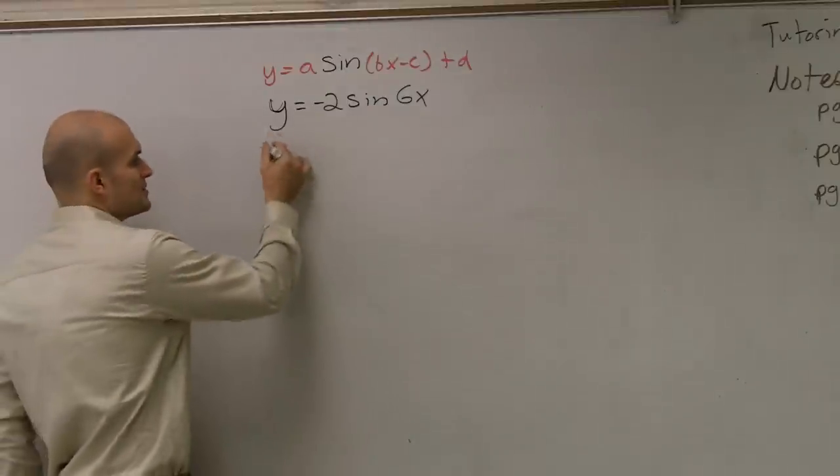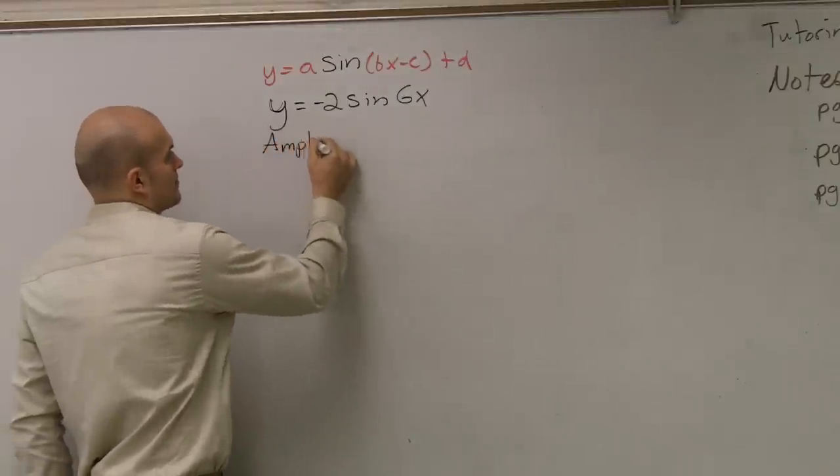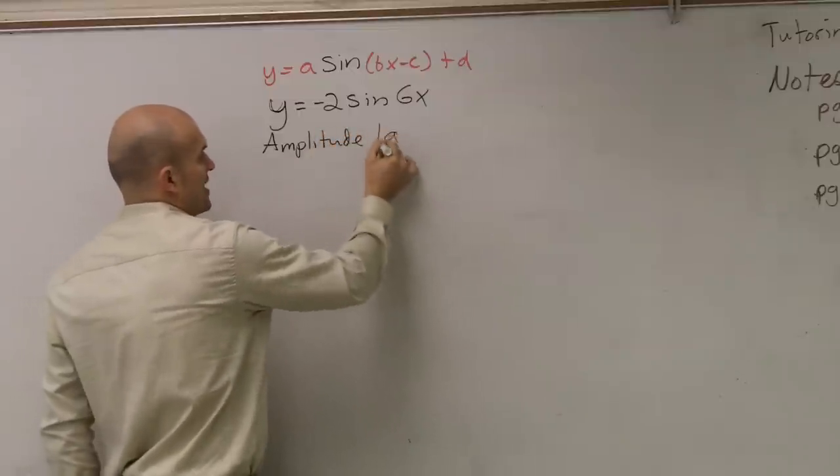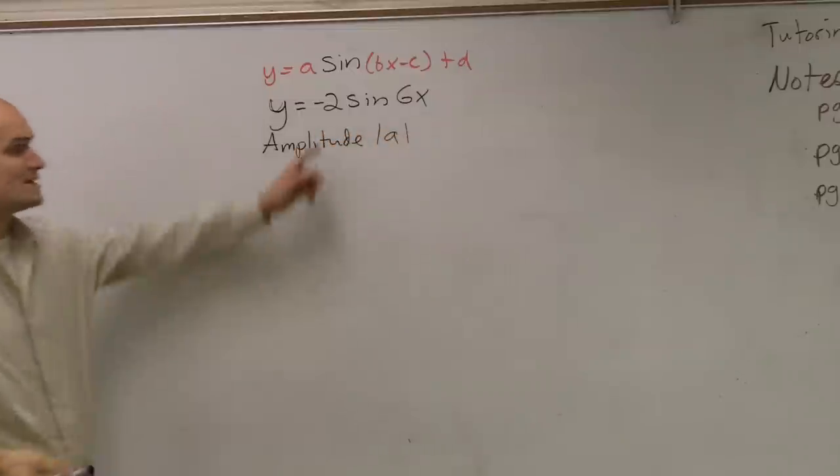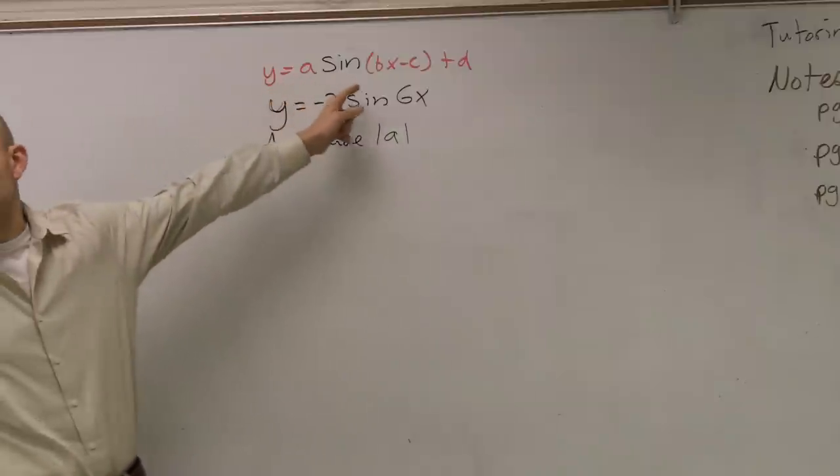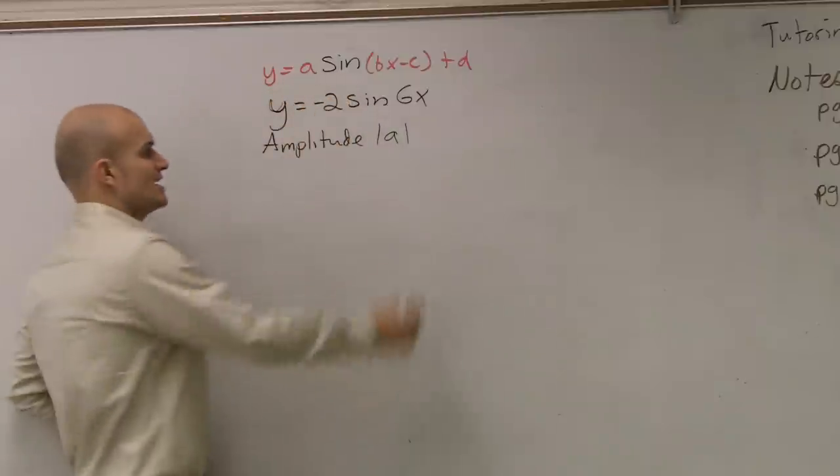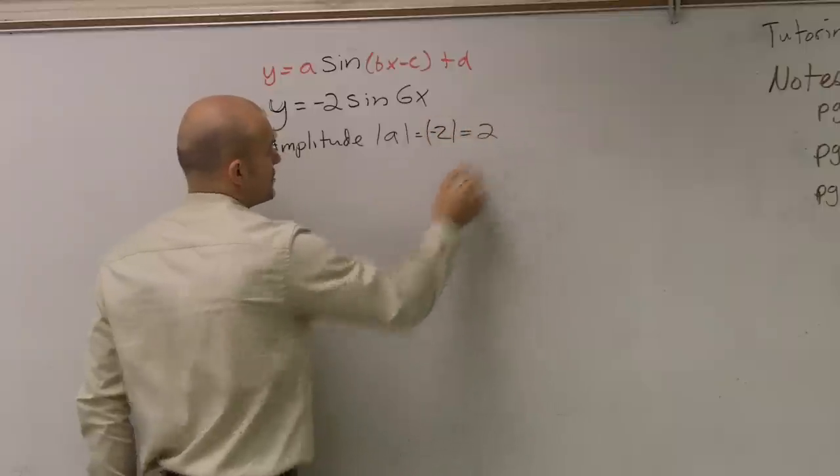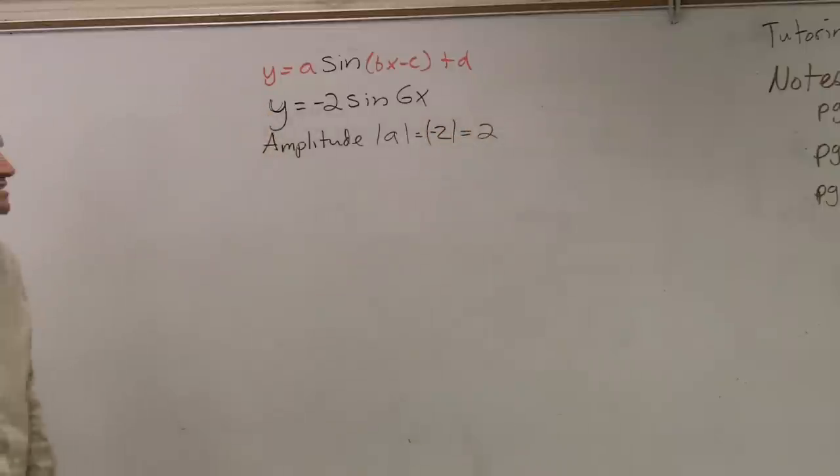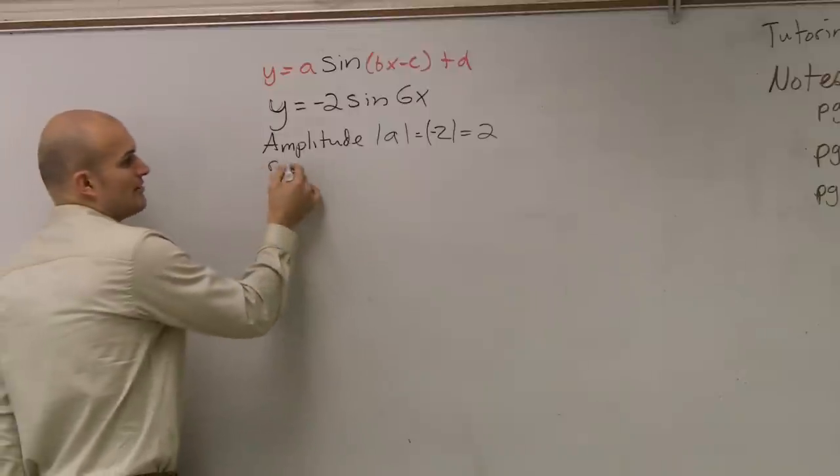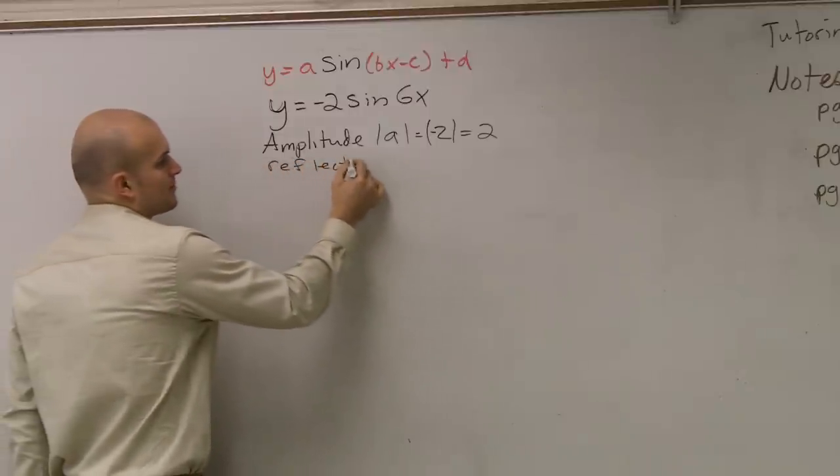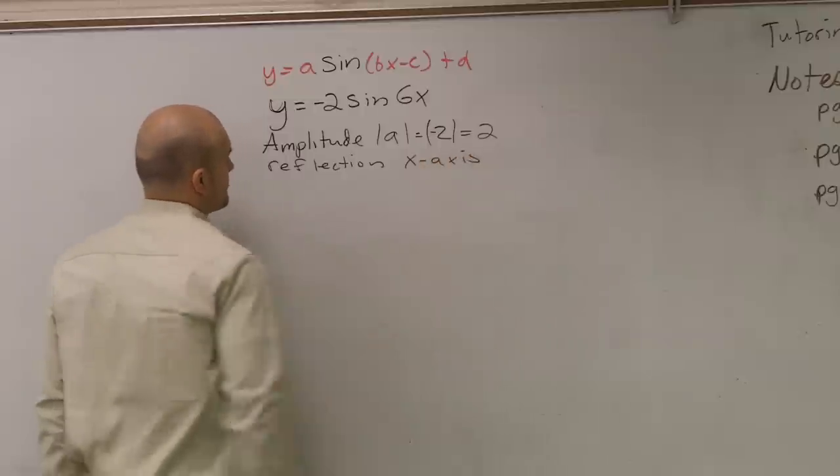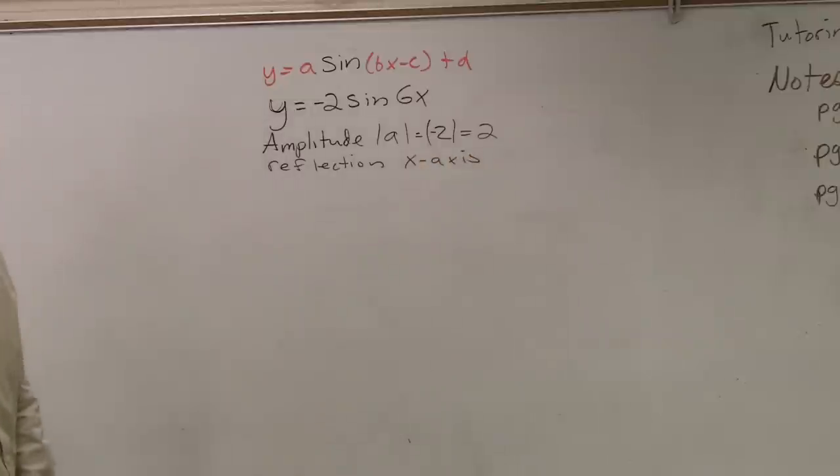The first thing is to find our amplitude. Remember that amplitude is going to be your absolute value of a. Remember, a is going to be whatever number you have in front of your function. So, in this case, we're going to have the absolute value of negative 2, which is 2. However, we do notice that since we have a negative, we are going to have now a reflection about the x-axis.